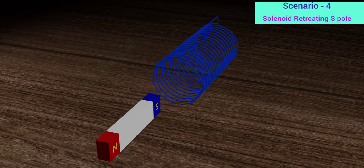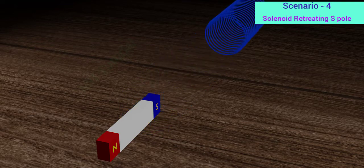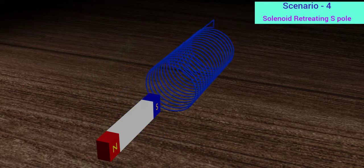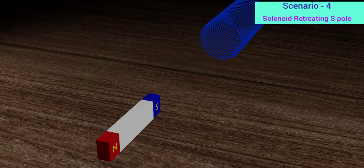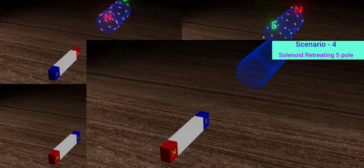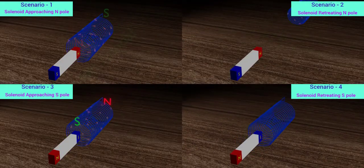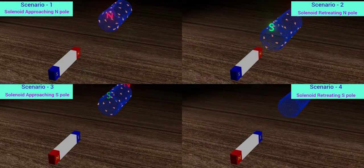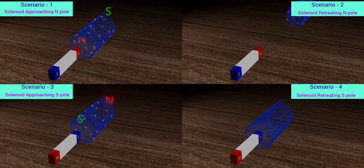Lenz's law actually is a special form of the law of conservation of energy. If the electromagnetic induction does not follow Lenz's law, then what could happen? The solenoid and the magnet could then produce enormous electric energy from a small amount of mechanical energy, which is impossible as per the law of conservation of energy.